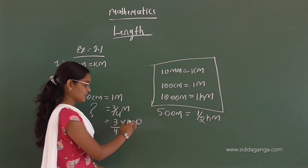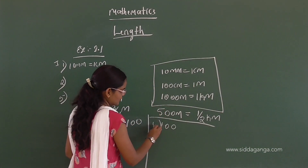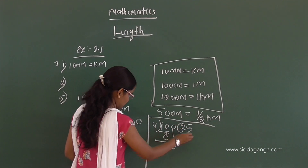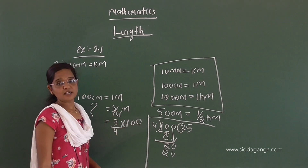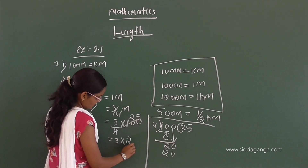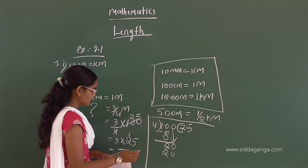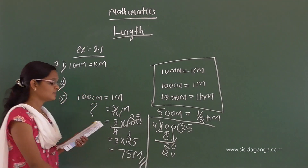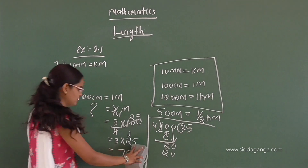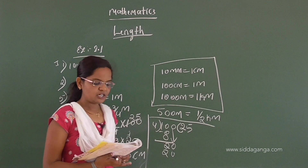100 divided by 4 equals 25. Then 3 into 25: 3 fives are 15, carry 1; 3 twos are 6 plus 1 is 7. So the answer is 75 centimeters. 75 centimeters make 3/4 of a meter. This is the solution for the first question.